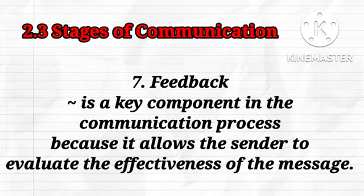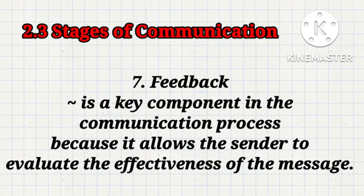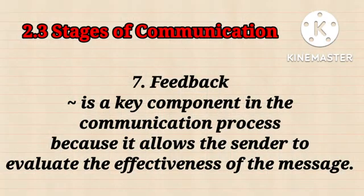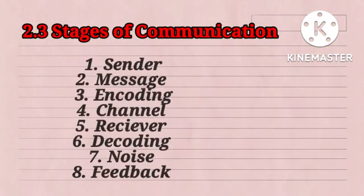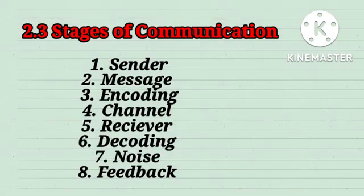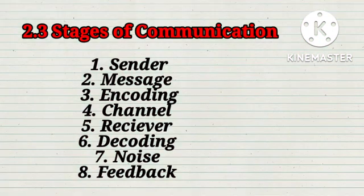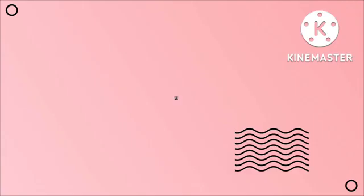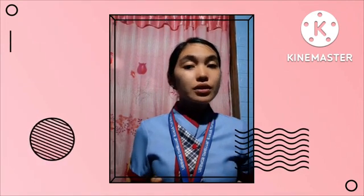Feedback allows the receiver to ask questions to build confidence and enables the sender to know the efficiency of the message. Feedback of information makes the communication process complete. To sum it up, there are eight stages of communication: source or sender, message, encoding, channel, receiver, decoding, feedback, and noise. Through the stages of communication, the sharing of a common meaning between the sender and the receiver takes place. Individuals that follow the communication process will have the opportunity to become more productive in every aspect of their profession.